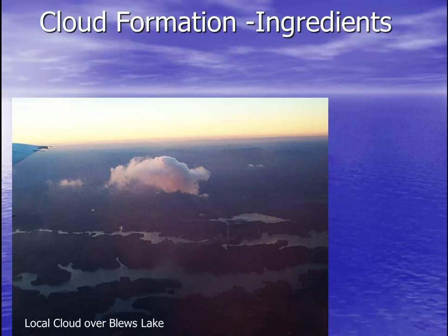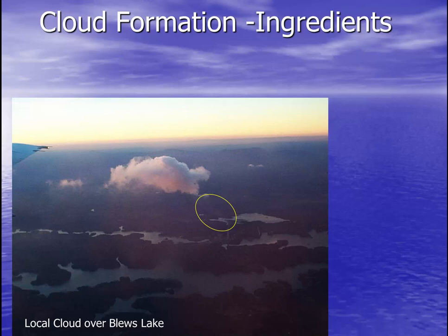This image that I took a number of years ago represents a lot of what we need to understand in making a cloud and cloud ingredients. There are a few things I'd like to call to your attention. Notice right here — this is a power plant. Blues Creek Steam Station is a large coal-fired power plant. On the right-hand side you'll notice some smokestacks, and there is in fact smoke coming from the smokestacks. And above that, of course, we have the cloud. So what's going on? What are our cloud ingredients?